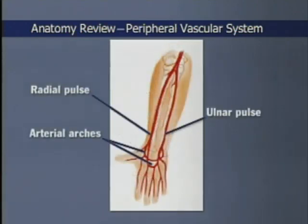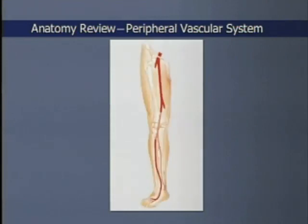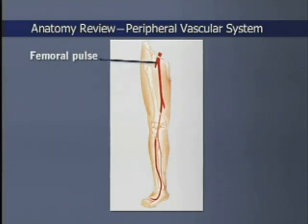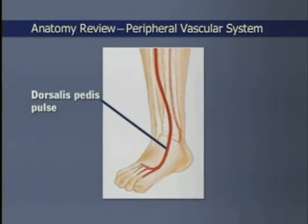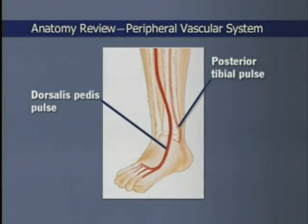The arterial arches interconnect the radial and ulnar arteries and help protect hand and finger circulation from arterial occlusion. In the legs, arterial pulses can usually be felt in four places: the femoral artery in the groin, the popliteal artery behind the knee, the dorsalis pedis artery on the dorsum of the foot, and the posterior tibial artery behind the medial malleolus of the ankle. An interconnecting arterial arch protects the circulation of the foot.